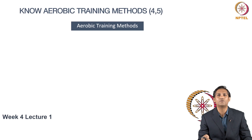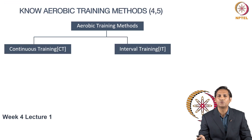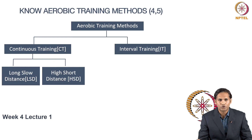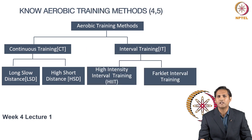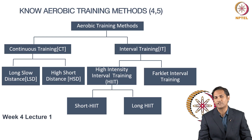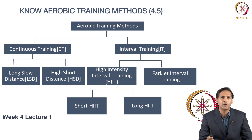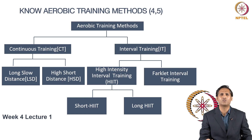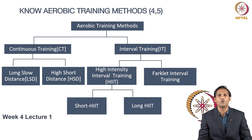Now let's find out the different types of aerobic methods you can use to improve your aerobic capacity. Aerobic training method is broadly classified into continuous training and interval training. Continuous training further has two classifications: long slow distance and high short distance continuous training. Similarly, interval training is further classified as high intensity interval training, which is further classified into short HIIT or long HIIT. We are going to explore each method with an example, connecting it to your weekly aerobic training routine so you can compare which method you are following and what options are available if you want to change.